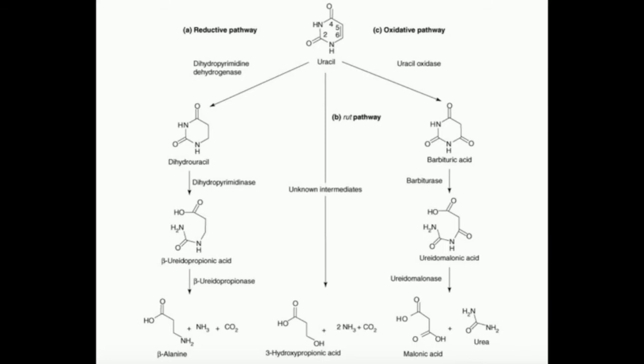There are two other pathways I'll just briefly mention. There's a rut pathway, which is not very well characterized, at least we know the end products here. And then there's also an oxidative pathway that's used in some organisms.